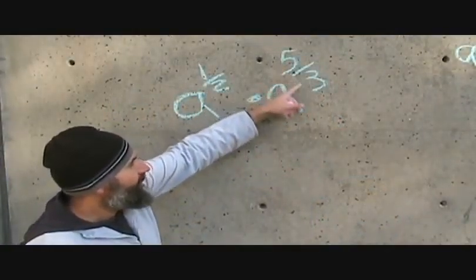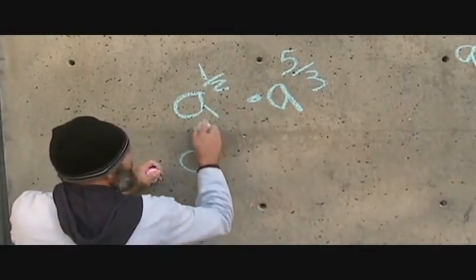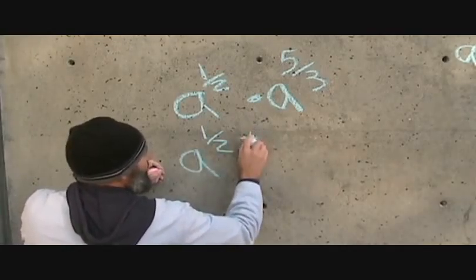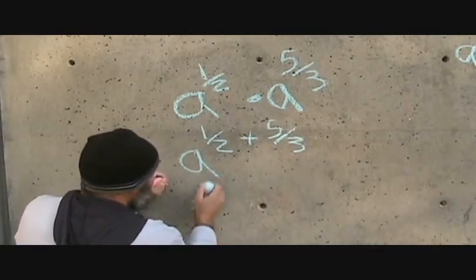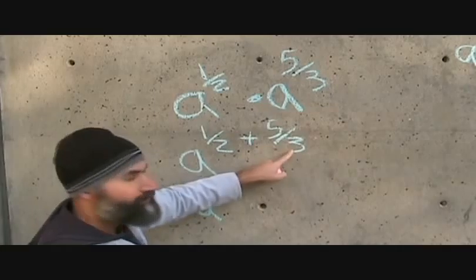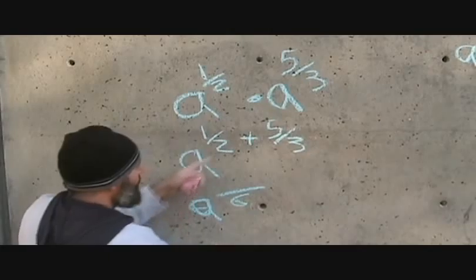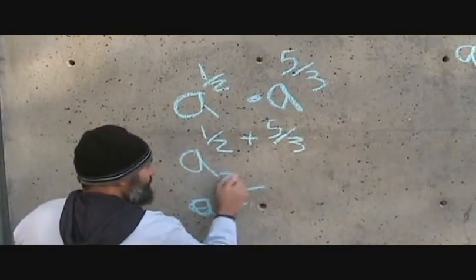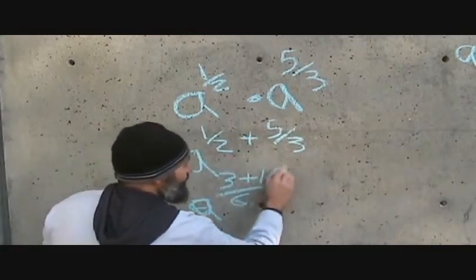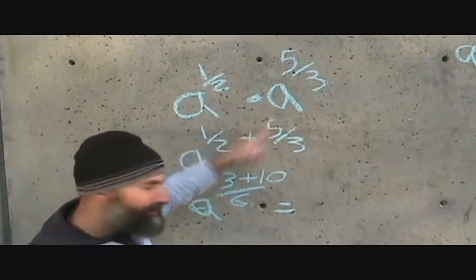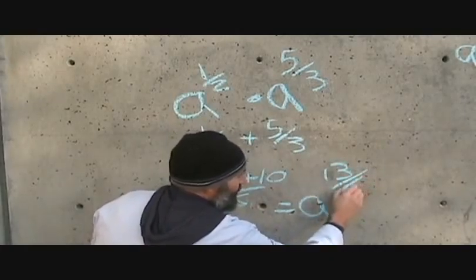If you have something like a to the power of a half times a to the power of 5 over 3, you've got to add the exponents. So this becomes a to the power of a half plus 5 over 3. To add these you find a common denominator — the common denominator between 2 and 3 is 6. Multiply the half by 3 to get 3, multiply 5 over 3 by 2 to get 10. So this becomes a to the power of 13 over 6.